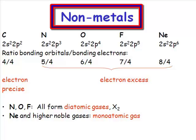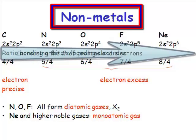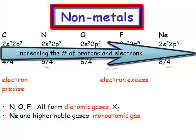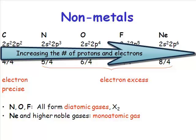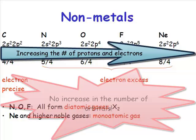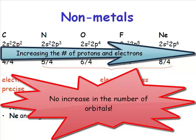Non-metal chemistry. As we move across the periodic table, we're increasing the number of protons and electrons. What we are not doing is increasing the number of orbitals.